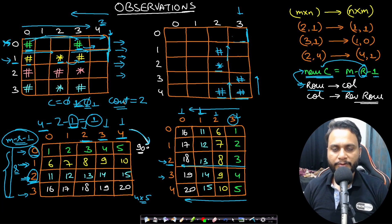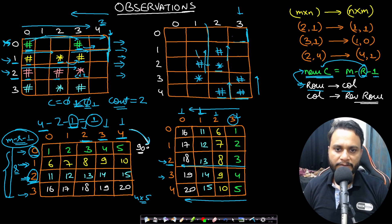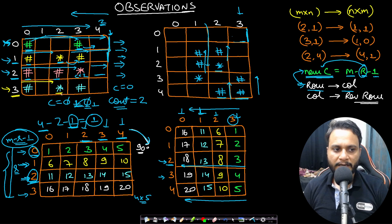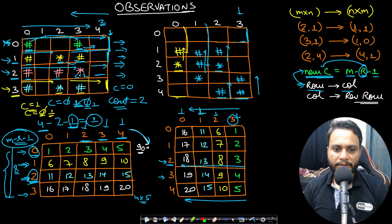We repeat this process for each row. For row 2, moving left to right with count = 2, when we see a star we place it at the equivalent column position, then fill two hash values moving upward. Reset counter to zero and continue. For row 3, a star is placed first, count = 1 so one hash is placed above it. After the star, one more hash is seen before hitting the wall, so one hash is placed moving upward from the wall.